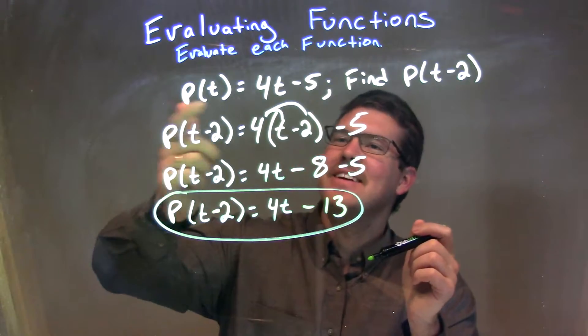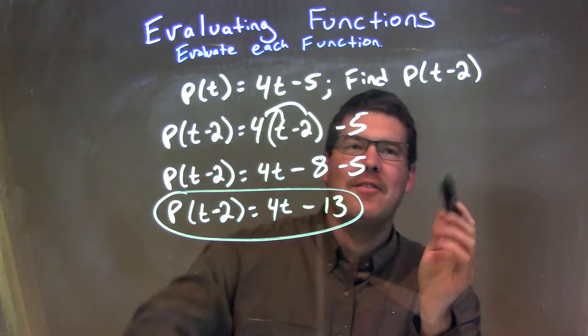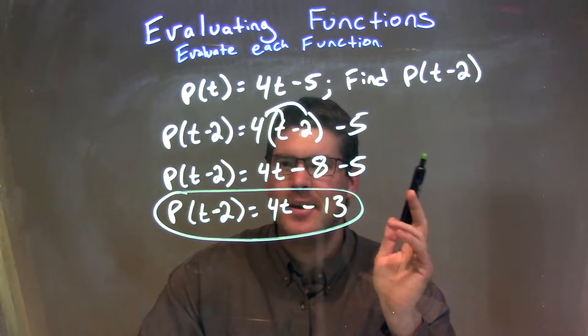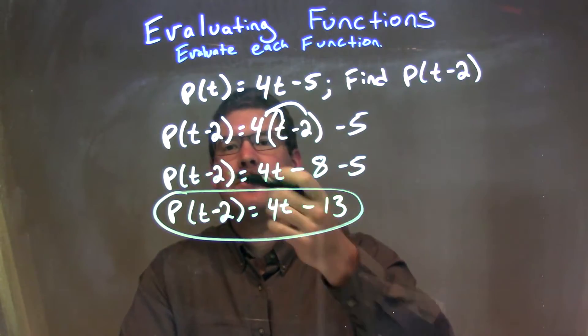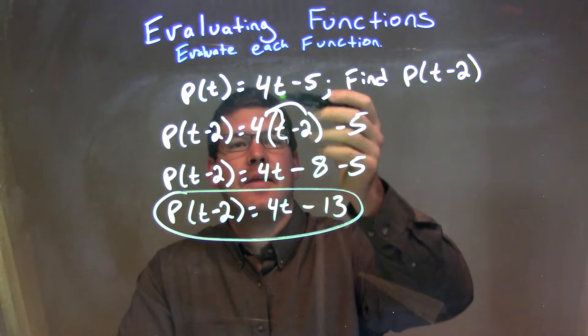So let's recap. We're given P of t is equal to 4t minus 5. We need to find P of t minus 2. So every single time we see a t, we plug in a t minus 2. T minus 2 right there, and then t minus 2 right there.